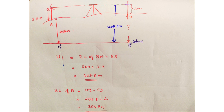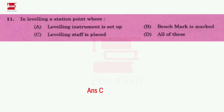So this is the HI method. Now we have questions. First question: in leveling, a station point is where the instrument is set. The leveling staff station — option C is the correct answer.